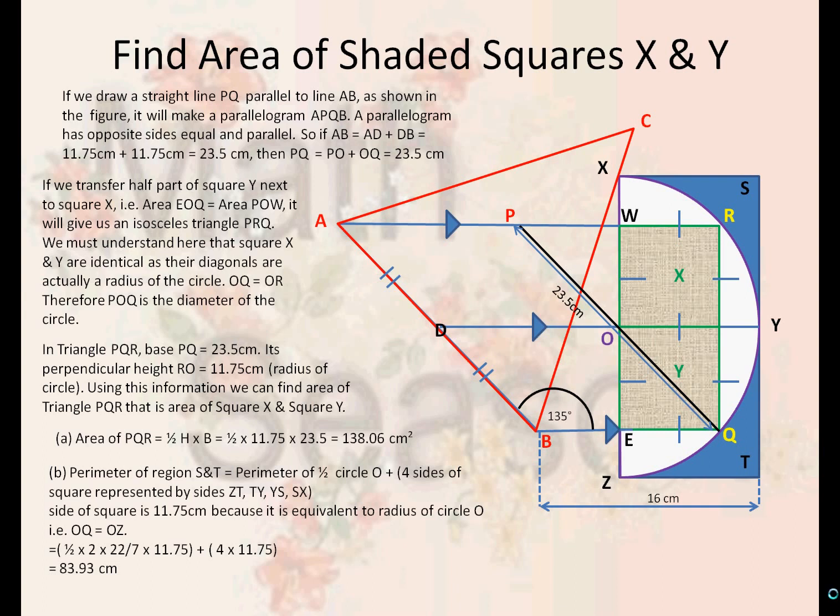When we solve for the circumference, the formula is 2πR. We take 2 times 22/7 times 11.75, which is the radius, multiplied by half because we only have half a circle, plus the four sides of the squares at 11.75 cm, we get an answer of 83.93 cm as the perimeter of areas S and T.